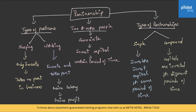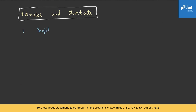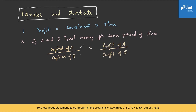These are the concepts involved in partnership. Now let us understand the formulae and shortcuts necessary to solve problems. The product of investment and time gives us profit. For A and B investing for the same period of time, capital of A divided by capital of B equals profit of A divided by profit of B.